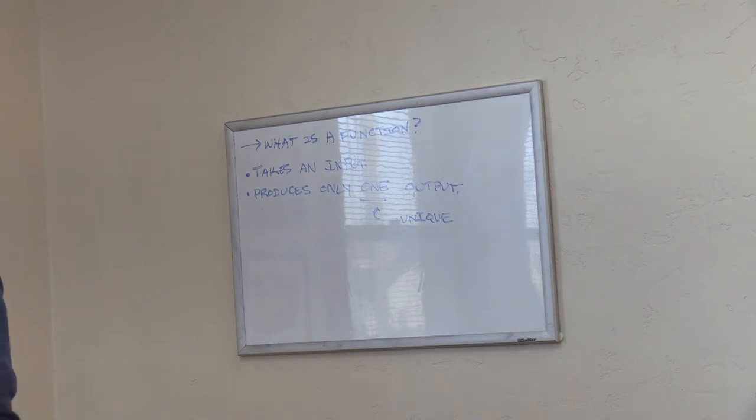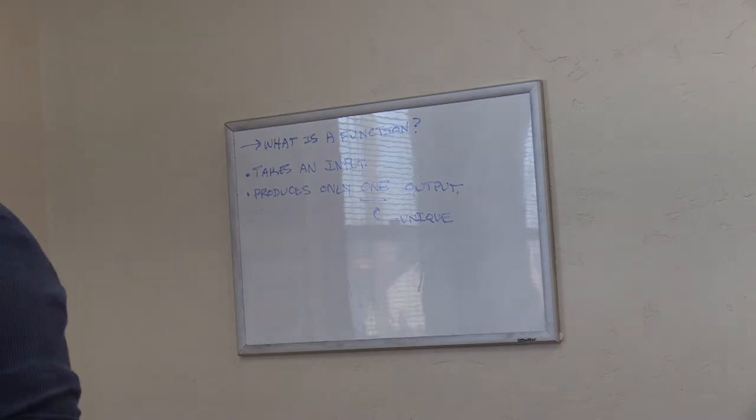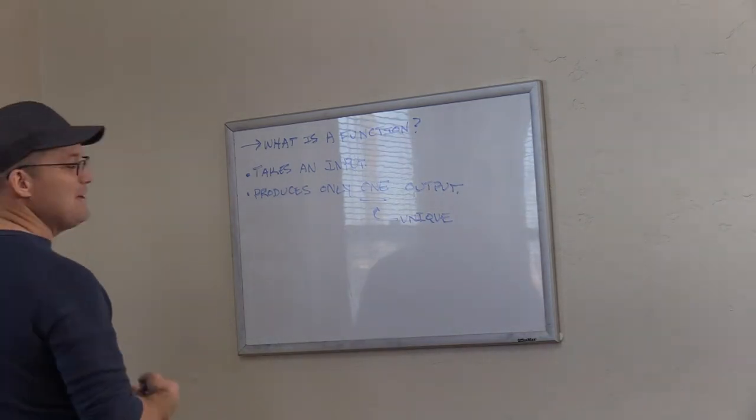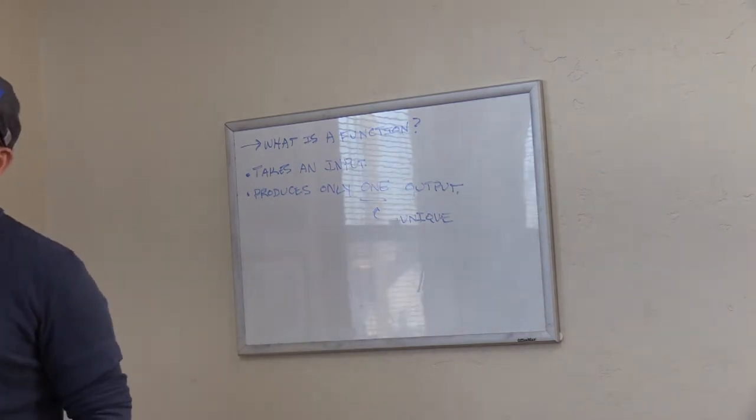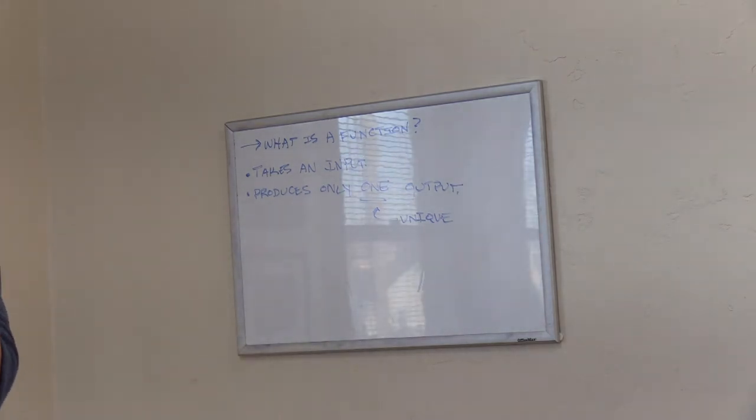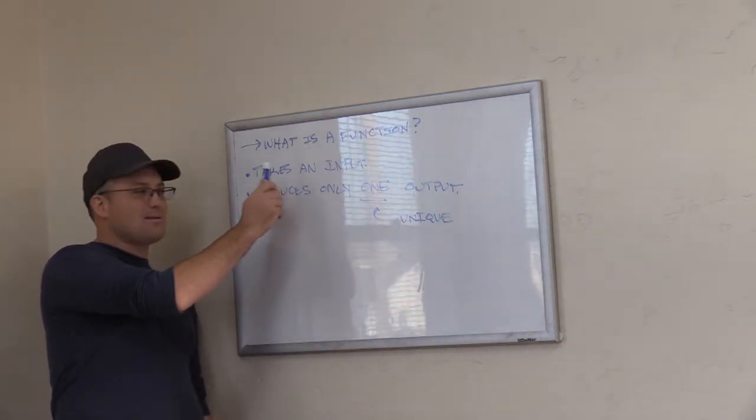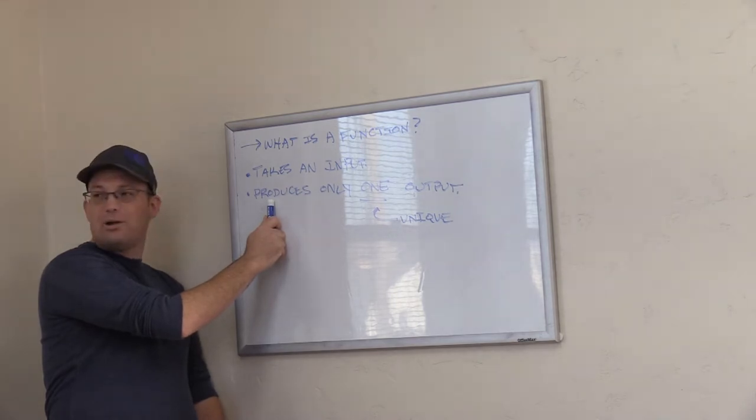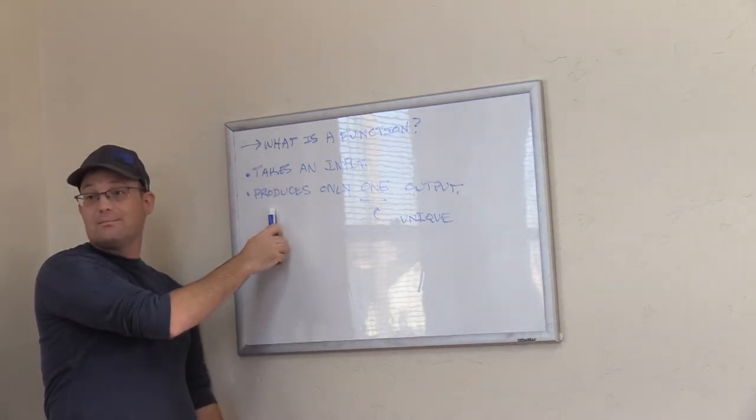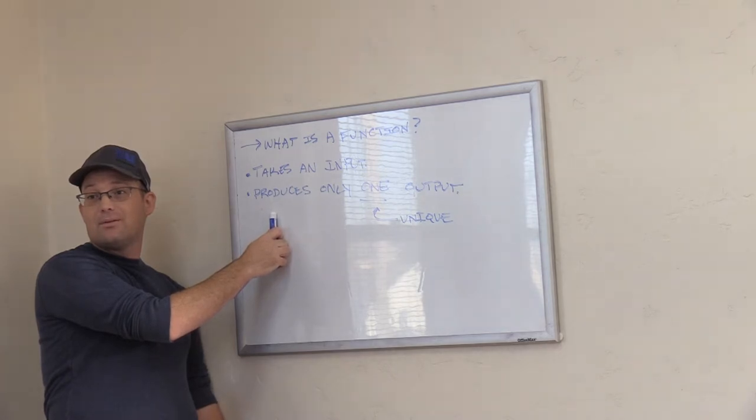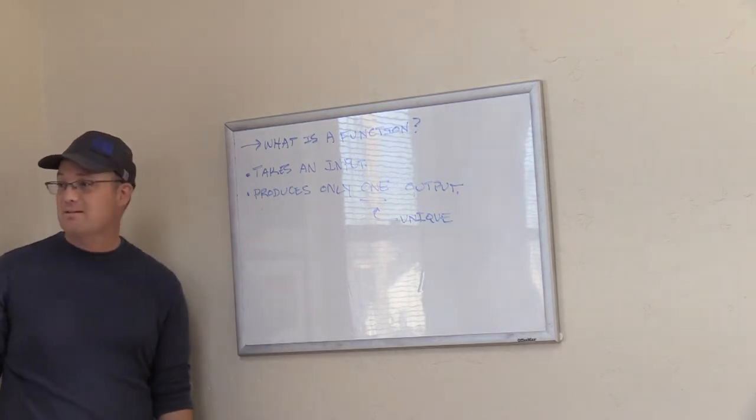So, for example, if I tell Monique here's the employee first name and last name, she can return to me a social security number. That's the HR function. Does it take an input? Yes. For that input, does it only produce one output? And here at RH it would. Takes name, gives an SS in.